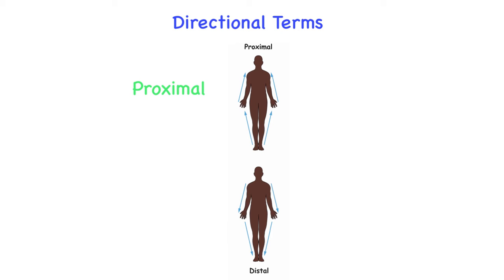The next set of terms are proximal and distal. We use these when talking about the limbs — the arms and the legs. Proximal means closer to the point of attachment to the body, while distal means further away from that point of attachment.